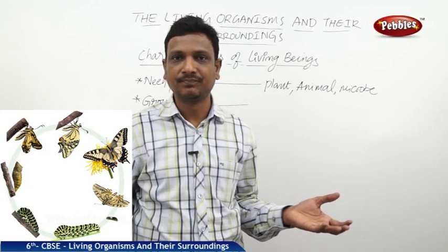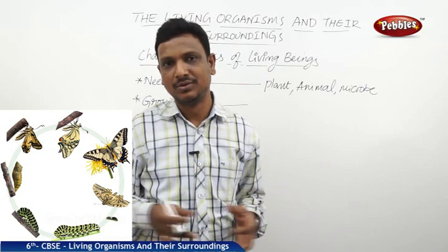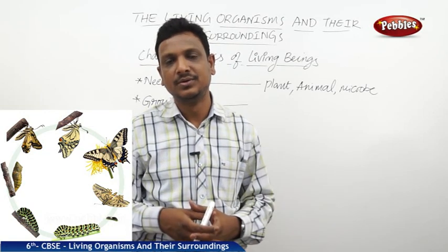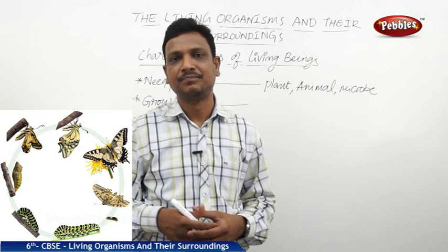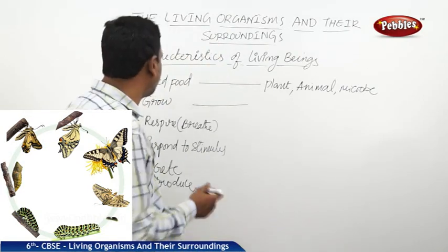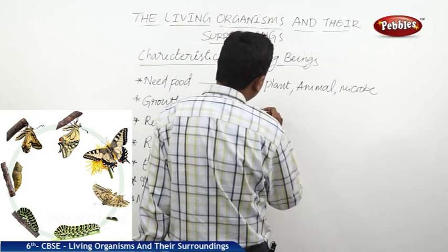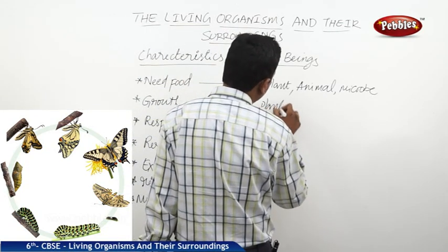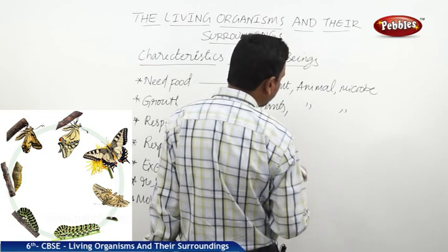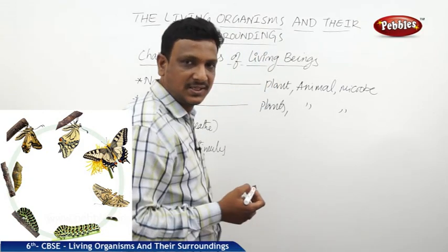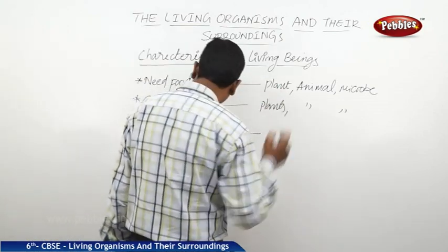Does a rock grow? No, you cannot find any growth in a rock. Do a chair and table grow? No, they don't grow. So they are not living things. The things that grow are living things. Growth is another characteristic of living things — all plants, animals, and microbes grow in size and height.